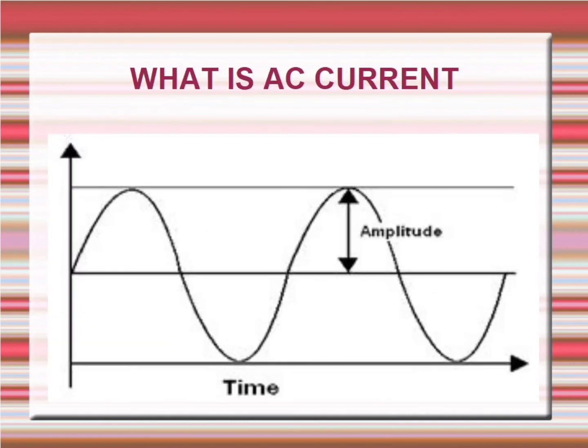Based on the flow of charge, electric current is classified into two types, that is, alternating current (AC) and direct current (DC). The flow of electric charge in a periodically reversed direction is known as alternating current, AC.